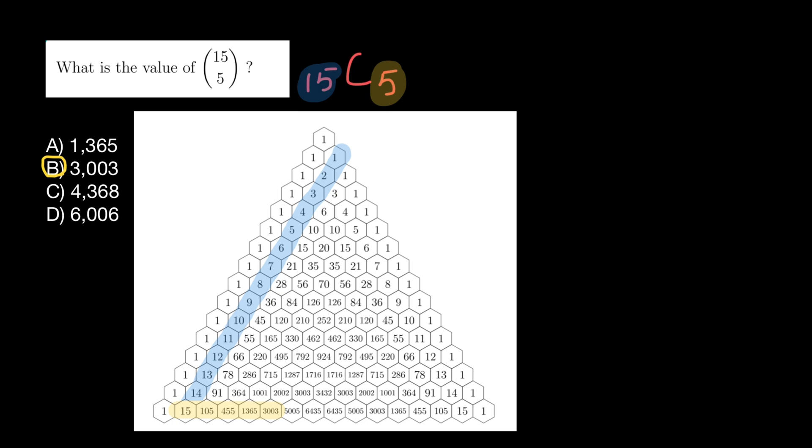And what if we don't have Pascal's triangle? How we are going to solve this problem? In this case, we can use a formula. And here's a formula: N factorial divided by K factorial, N minus K factorial.